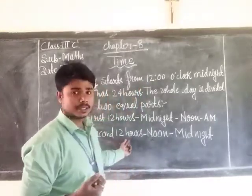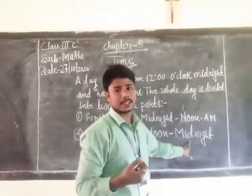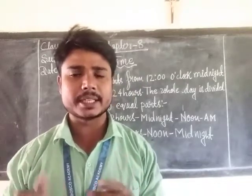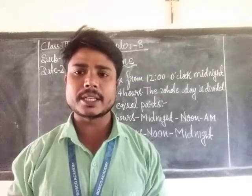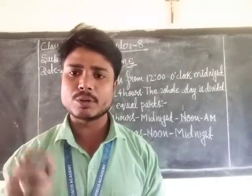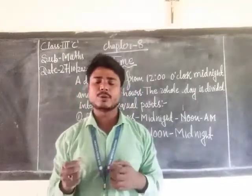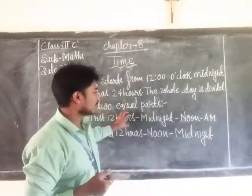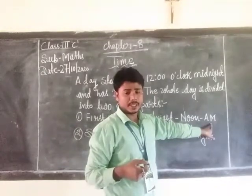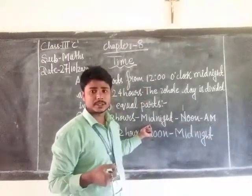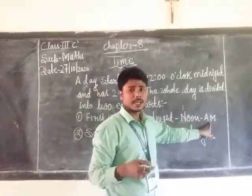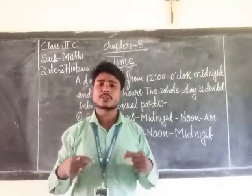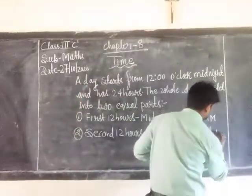The second 12 hours begins from noon to midnight. Now, what is noon? 12 o'clock in the day is called noon, and 12 o'clock in the night is called midnight. For the second 12 hours from noon to midnight, we are using PM. PM means post-meridian.